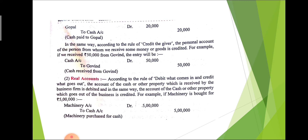The second example: if we received 50,000 from Govind, we are again the businessman. Cash comes into the business, so anything that comes into the business will be debited. The cash is received from Govind, so Govind is behaving as a giver, and the rule says credit the giver. The journal entry will be: cash account debit to Govind, by rupees 50,000 on both sides.